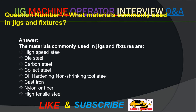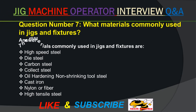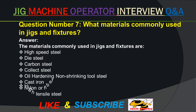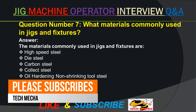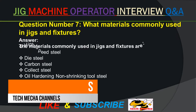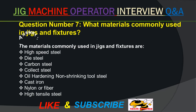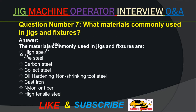Question number seven. What materials are commonly used in jigs and fixtures? Answer. The materials commonly used in jigs and fixtures are: high speed steel, die steel, carbon steel, collet steel, oil hardening non-shrinking tool steel, cast iron, nylon or fiber, and high tensile steel.